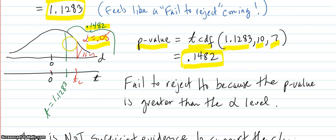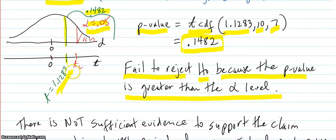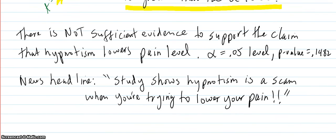And that puts 0.1482 is bigger than the alpha area of 0.05, way bigger. So that puts our t-value of 1.183 indeed over to not beyond the t-critical. So it is a fail to reject H0 because the p-value is greater than the alpha level. In other words, your t-value is not beyond the t-critical.